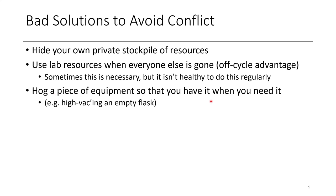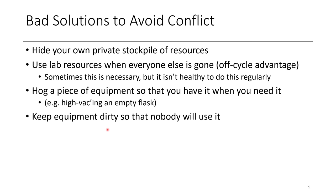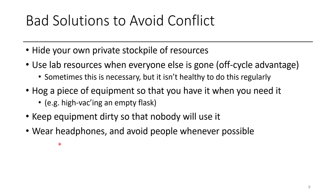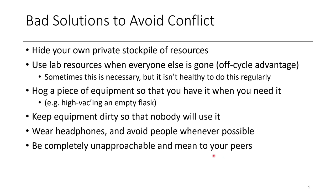Another bad approach is hogging a piece of equipment so you have it when you need it — for instance, rotovapping an empty flask so that when your sample is ready, you can just swap it in. People walk by, see it running, and think it's busy. Also, keeping equipment dirty so no one will use it — this can happen with stir bars or common glassware. Another bad approach is being a totally unapproachable lab member: wearing headphones and being mean to peers so they don't bother you with problems. These are all terrible behaviors. If you see people doing them, try to have a moment with them and remind them that you're all on the same team.